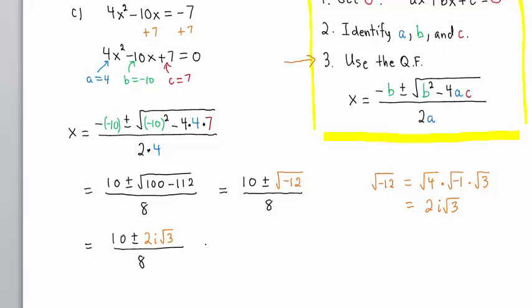So we have (10 ± 2i√3)/8. This equals 10/8 ± 2i√3/8. Dividing each by 2, we have 5/4 ± i√3/4. So our solutions are x = 5/4 + i√3/4 and x = 5/4 - i√3/4.